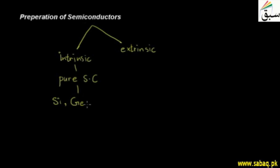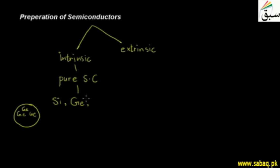If we take silicon or germanium and say that it is intrinsic, it means that we have a pure molecule — all atoms are germanium or silicon with no impurities. If we look at the outermost shell, the valence electrons which are bonded with other atoms — we see that germanium and silicon have four electrons in the outermost shell.